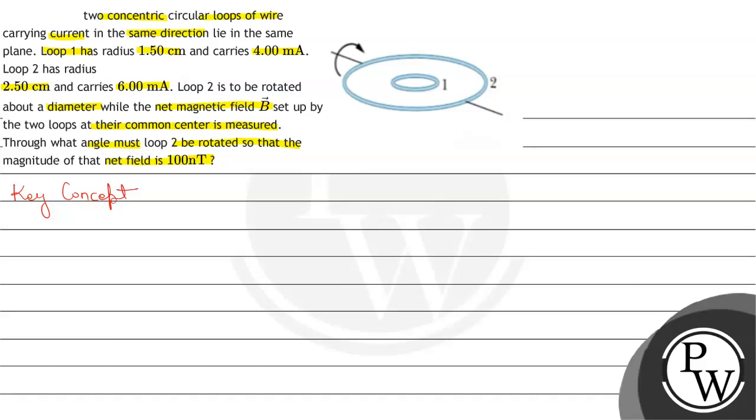The key concept behind this question is the net magnetic field at the center of a circular loop of wire carrying current i is given by B equals mu naught i upon 2r. This is the formula for magnetic field at the center of a circular loop.